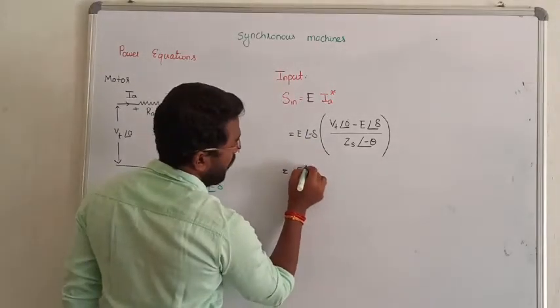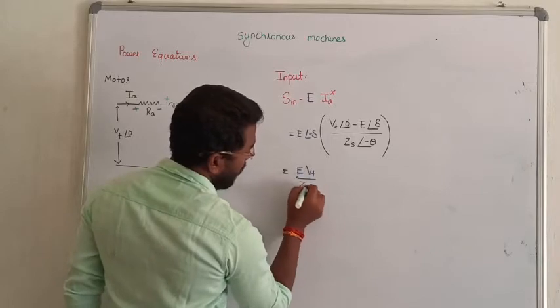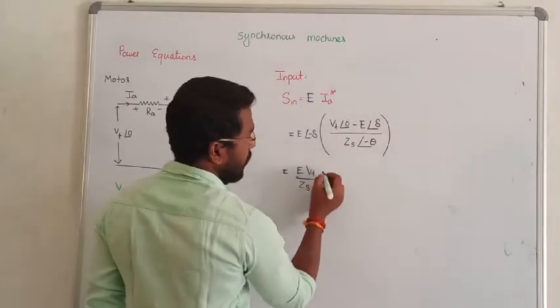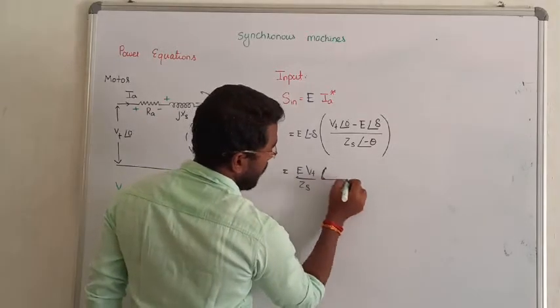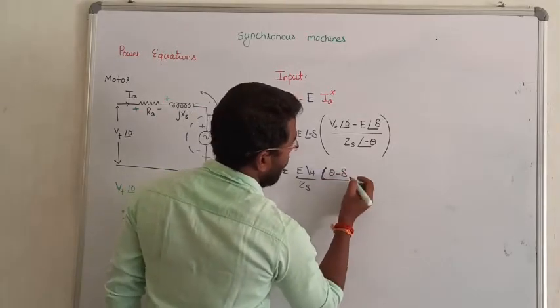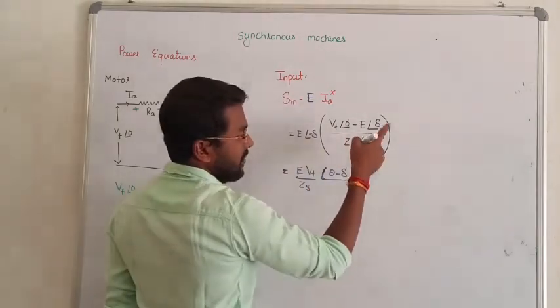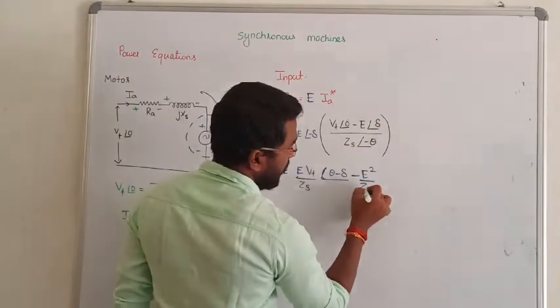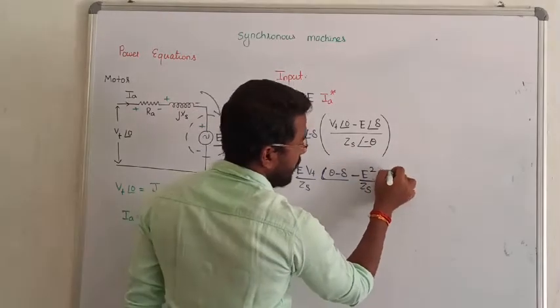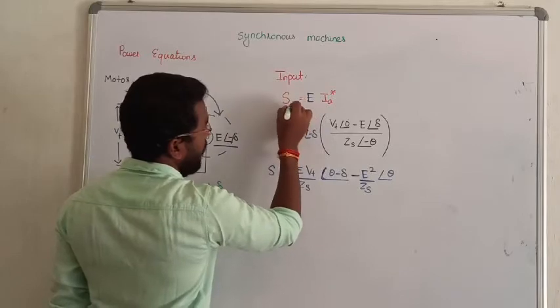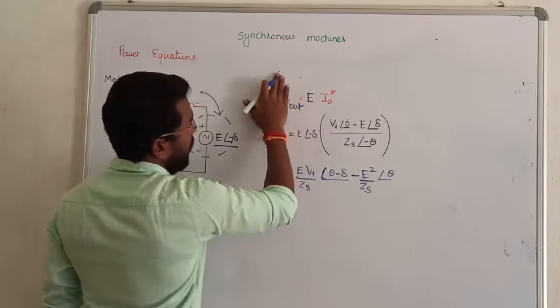If we have to know, what do we have to write? E, VT by Zs process, minus del minus theta. Minus theta plus theta. So it can be written as at an angle of theta minus del. Second term become minus E dot E become E square minus del plus theta minus theta. Minus theta power in this one become plus theta. So that is generalized apparent power. Now it is output power, that is not input power.